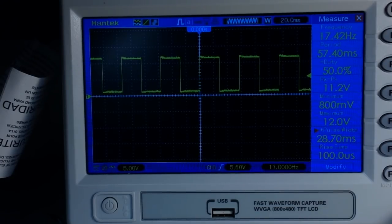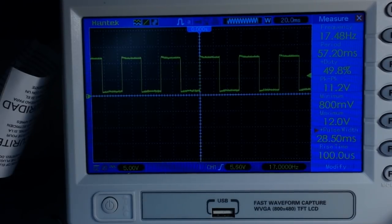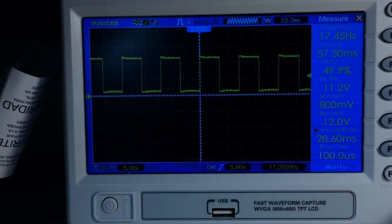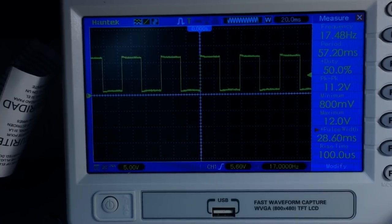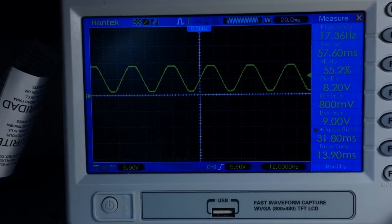I'm putting 12 volts in and we're getting 11.2 volts peak to peak. On the square wave output, I'm adjusting the amplitude knob, but nothing happens. That's kind of what I expected based on what I had read about this. So let's switch over now to the sine wave output.